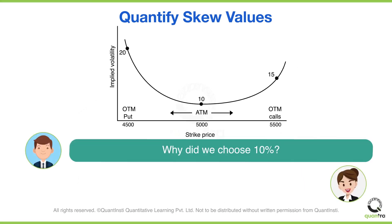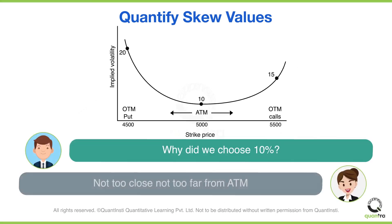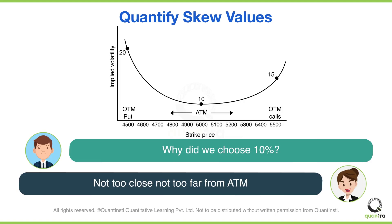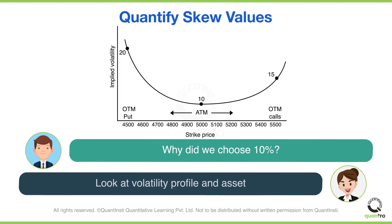Why did we choose 10%? The reason is that we don't want an option which is too close to the ATM option or too far from the ATM option. Therefore, you can select the out-of-the-money options which are between 5% to 12% from at-the-money options. This range is a function of the volatility profile of the underlying asset. We have selected 10% in this video.